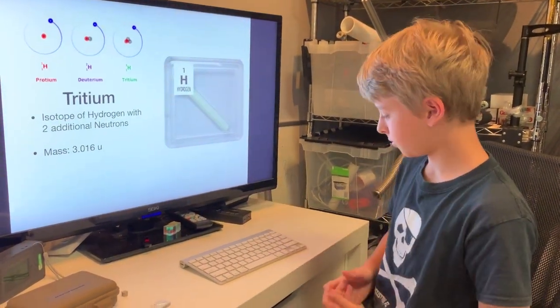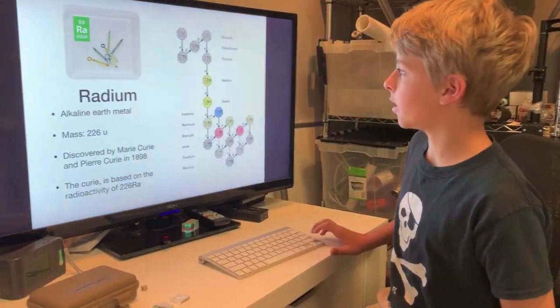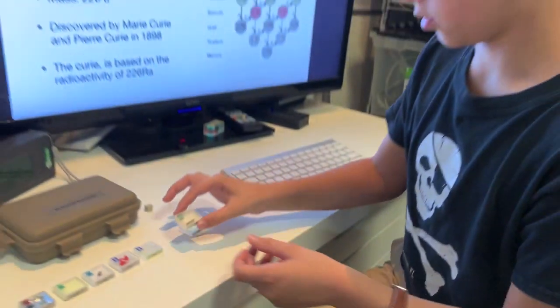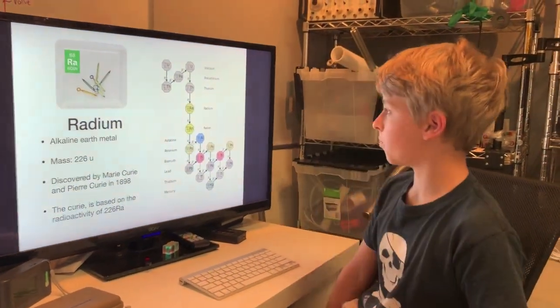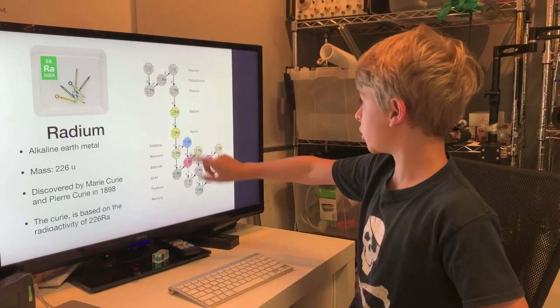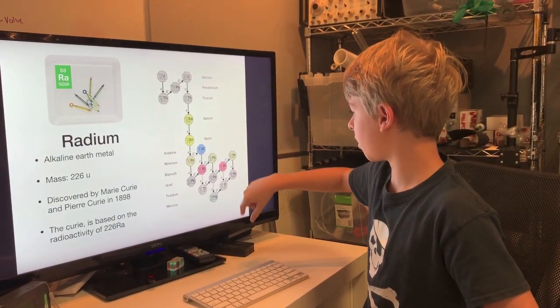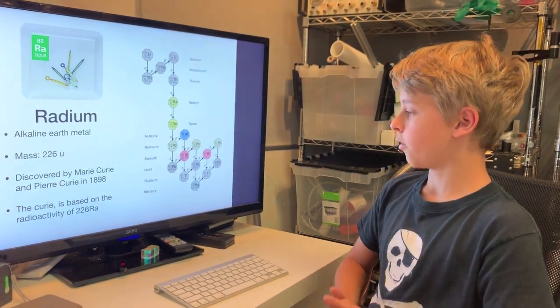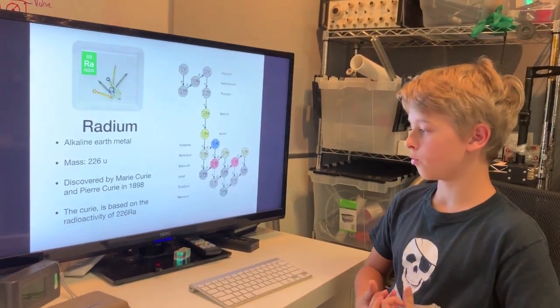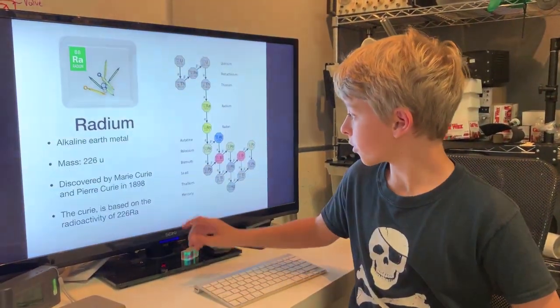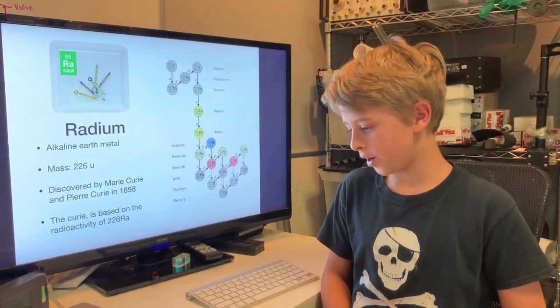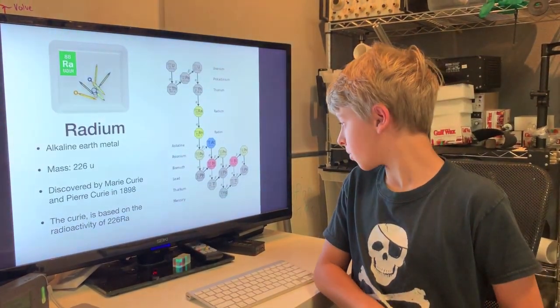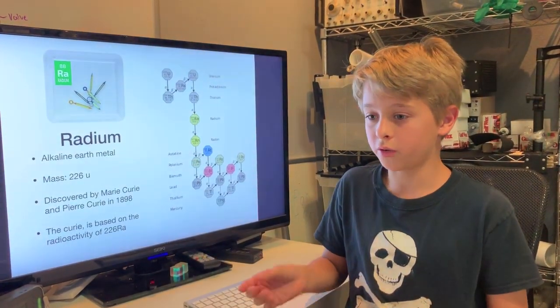Next we have radium. We have some nice radium clock handles or watch handles. Radium is an alkaline earth metal. This is the uranium decay chain which radium is right here, which then decays into radon, which then goes all the way until lead. It was discovered by Marie Curie in 1898. The Curie is based on the radioactivity of radium-226. Interesting fact: Marie Curie died because she was exposed to so much radiation from radium that she got cancer. She was ignorant to the fact that radiation damaged cells and caused cancer.